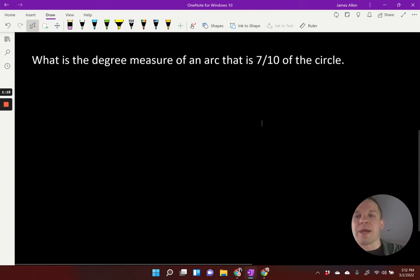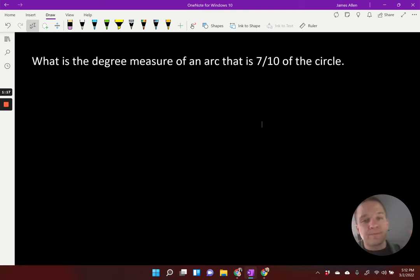You know, that was so much fun, let's do another arc and angle problem. Okay, what is the degree measure of an arc that is seven-tenths of a circle? Well, how many degrees are there in a circle? There's 360 degrees in a circle.